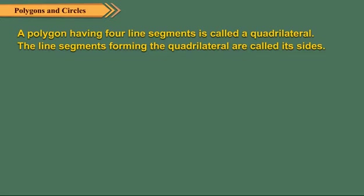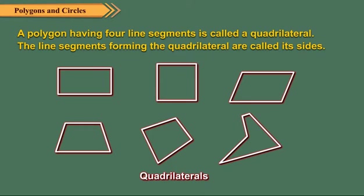A polygon having 4 line segments is called a quadrilateral. The line segments forming the quadrilateral are called its sides.